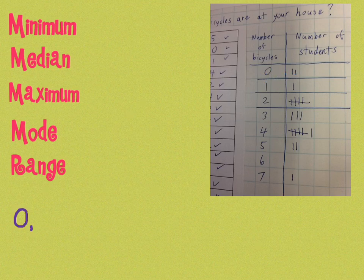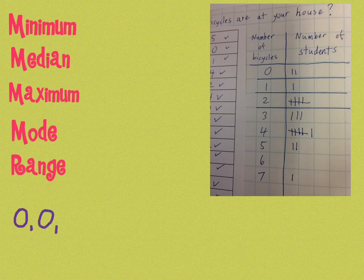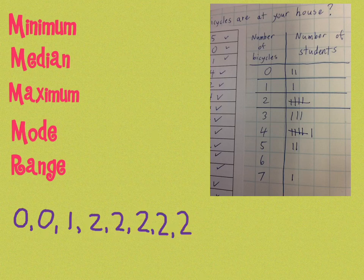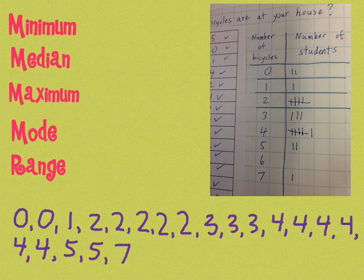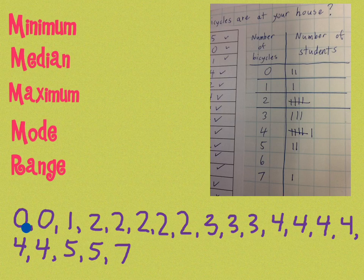So you can see we had two zeros and one one and then five twos and then three threes, six fours, two fives, and a seven. So let me write the rest of that out. Okay, so there it is, and I have 20 numbers, and I know we have 20 students in our class, so that's the right data here.